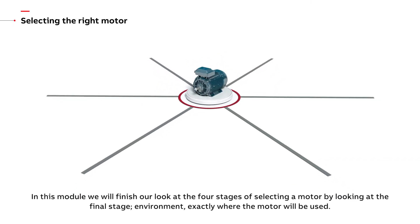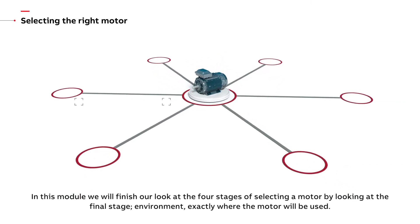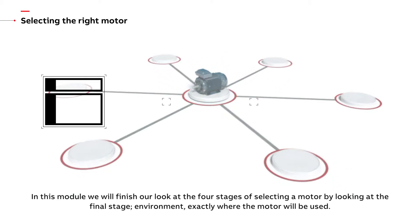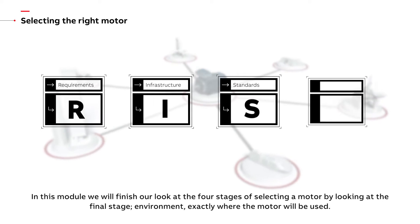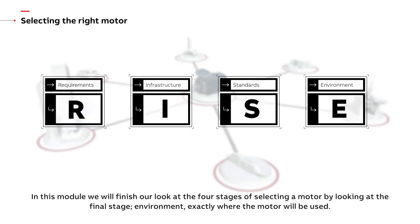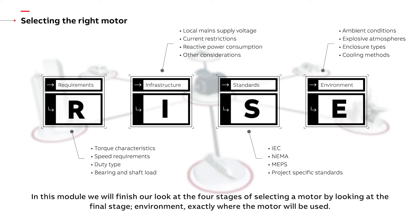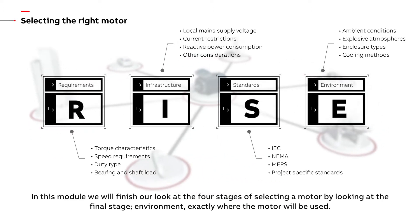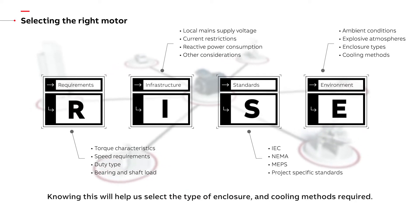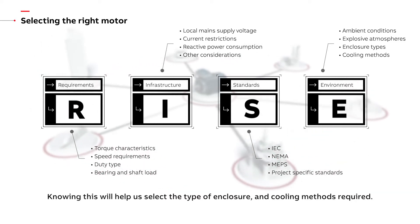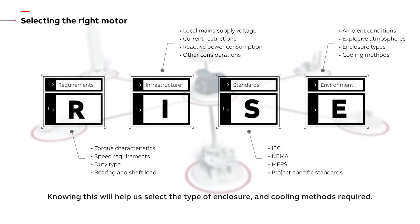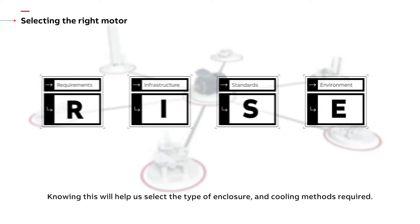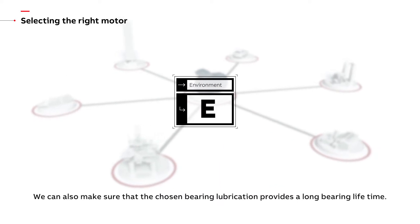In this module, we will finish our look at the four stages of selecting a motor by looking at the final stage: environment — exactly where the motor will be used. Knowing this will help us select the type of enclosure and cooling methods required. We can also make sure that the chosen bearing lubrication provides a long bearing lifetime.